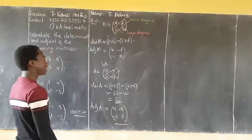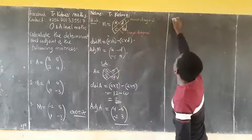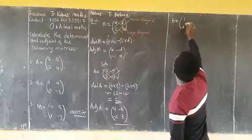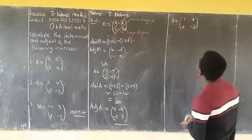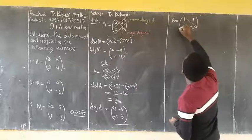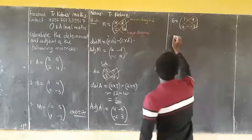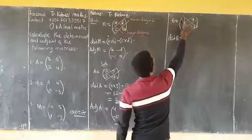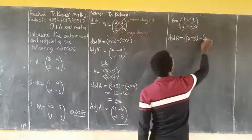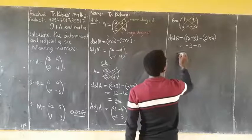When I come to matrix B, my B is given by 1, negative 3, 0, 4. This one is my major diagonal and this one is my minor diagonal. My determinant of B is going to be 1 times 4 minus 0 times negative 3. This would be 4 minus 0, which becomes 4.